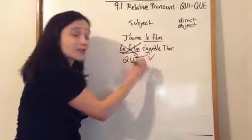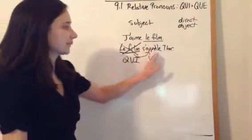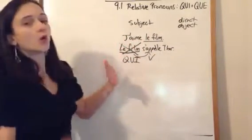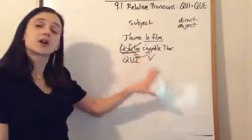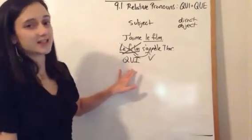So, take that out. Replace it with qui because that's what pronouns do. J'aime le film qui s'appelle Thor. I like the film that, or which, is called Thor. Now, if we were talking about a person, we would translate it as who, but it still is qui.